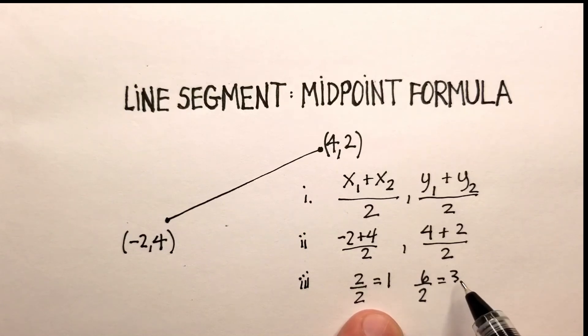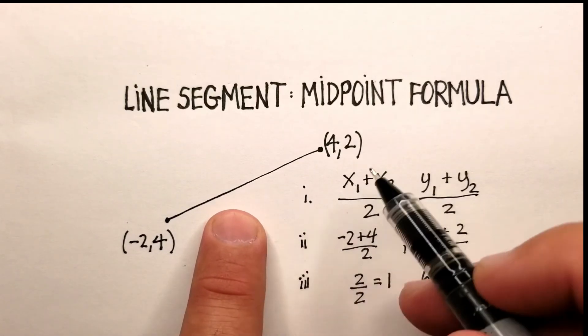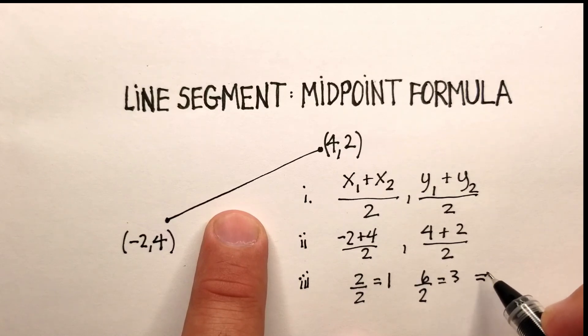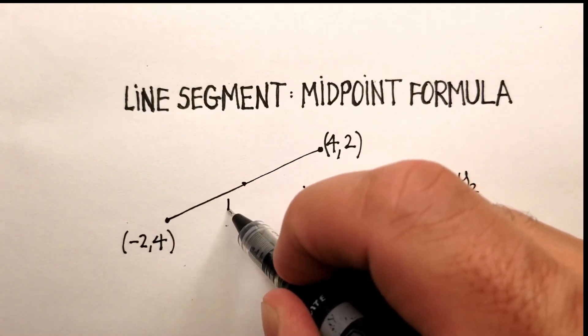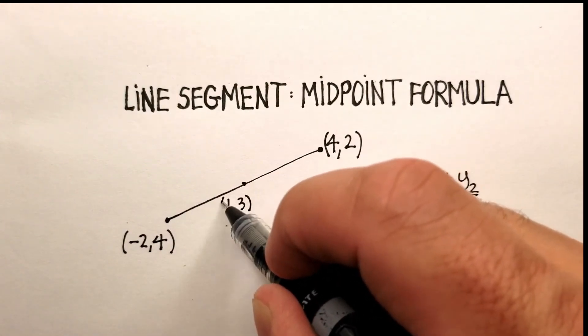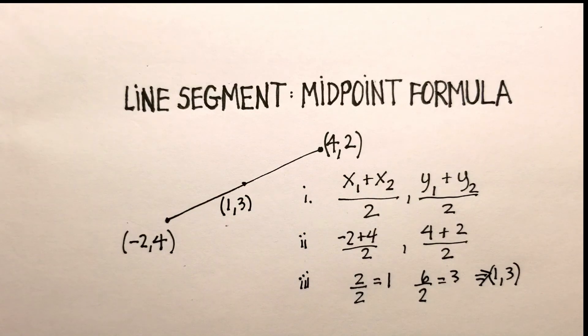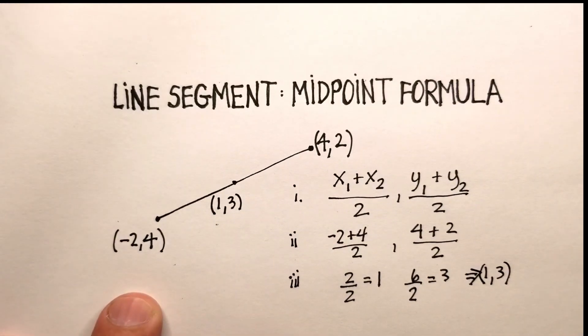The coordinate then, or the midpoint for this particular line segment is the coordinate 1, 3. And essentially, that's where it will be. I hope this was instructive for you.